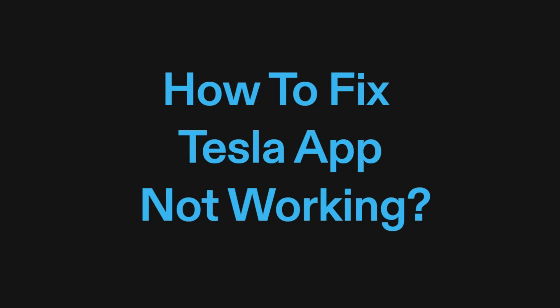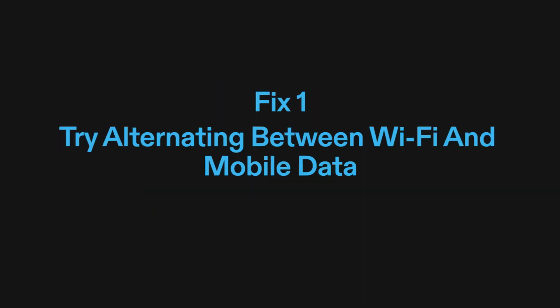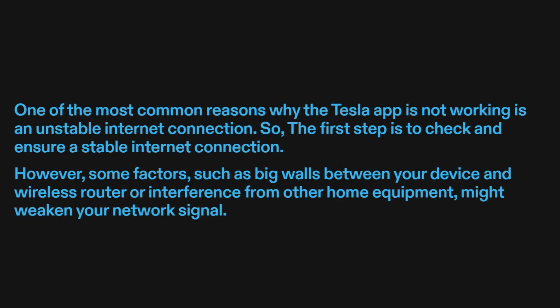How to fix Tesla app not working? Fix one: try alternating between Wi-Fi and mobile data. One of the most common reasons why the Tesla app is not working is an unstable Internet connection. The first step is to check and ensure a stable Internet connection.